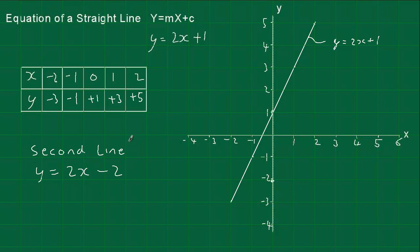Okay, we've now got this second equation here: y equals 2x minus 2. It's similar to this one, 2x plus 1. The gradient is the same, it's 2. But the intercept, the c, is different. This one was plus 1, this one's going to be minus 2. So we know the intercept is minus 2, so let's plot that first.